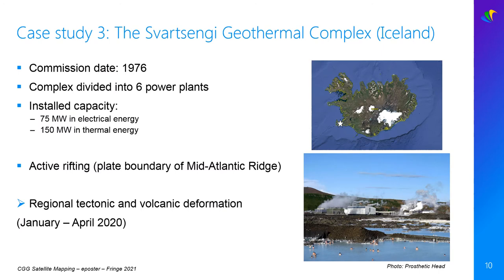The last case study is at the Svartsengi geothermal complex in Iceland. It is located on the Reykjanes peninsula and lies within the Svartsengi volcanic system. The overall peninsula straddles the mid-Atlantic plate boundary. It is therefore prone to regular tectonic activity, and sometimes volcanic activity occurs as well.